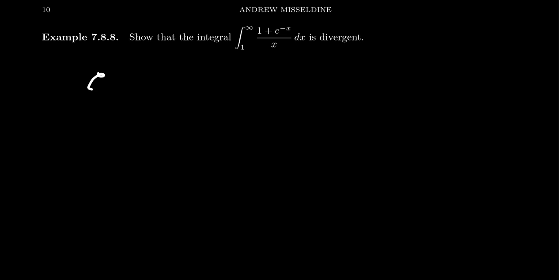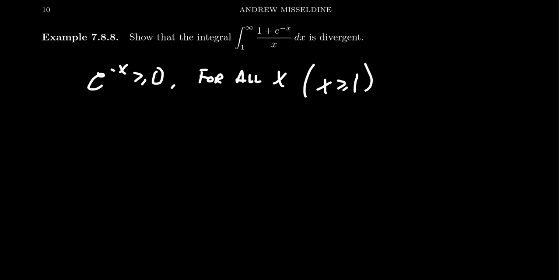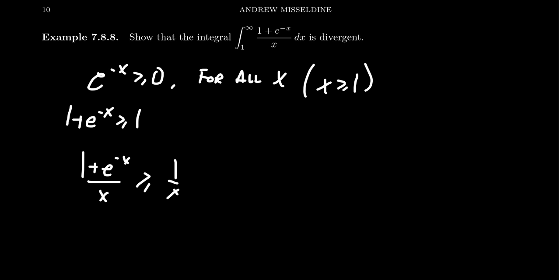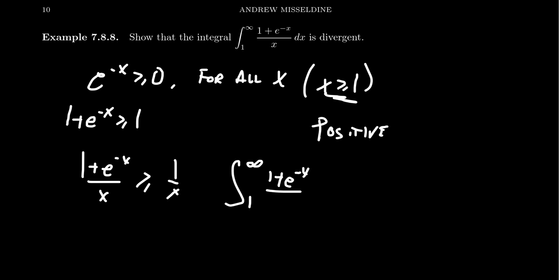Coming back to this example, let's show it's divergent. We're going to make the following observation: e to the negative x is greater than or equal to zero for all x. In particular, this is true when x is greater than or equal to one. So adding one, we get 1 plus e to the negative x is greater than or equal to one. And if x is positive, this means (1 plus e to the negative x) over x is greater than or equal to one over x. We divided both sides by x, which is positive since x is greater than one, so the direction doesn't switch. So the integral from one to infinity of (1 plus e to the negative x) over x dx is greater than or equal to the integral from one to infinity of dx over x.